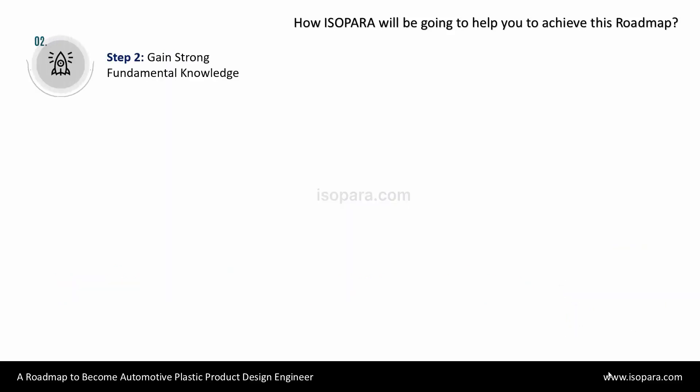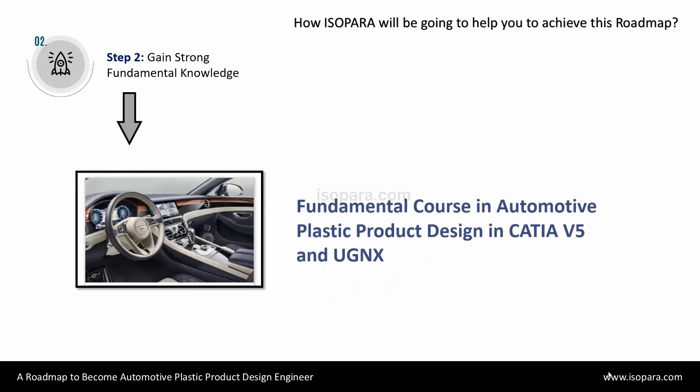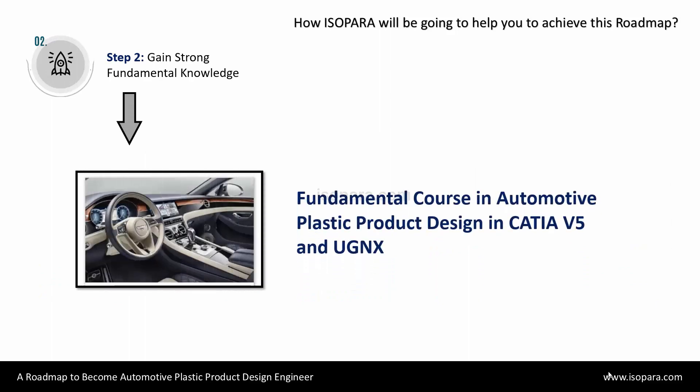For step 2, the course is Fundamental Courses in Automotive Plastic Product Design in CATIA and Unigraphics. In step 2, you have to gain a strong knowledge of automotive plastic product design guidelines and various aspects related to manufacturing, DFA, DFM, DFS, material selection, and understanding of the strength of plastic products in depth.